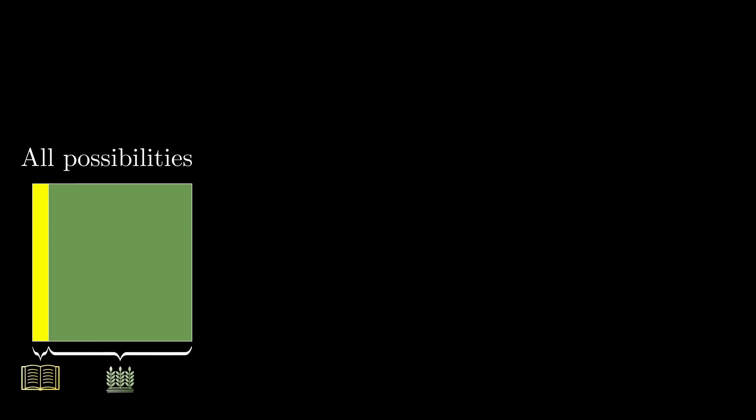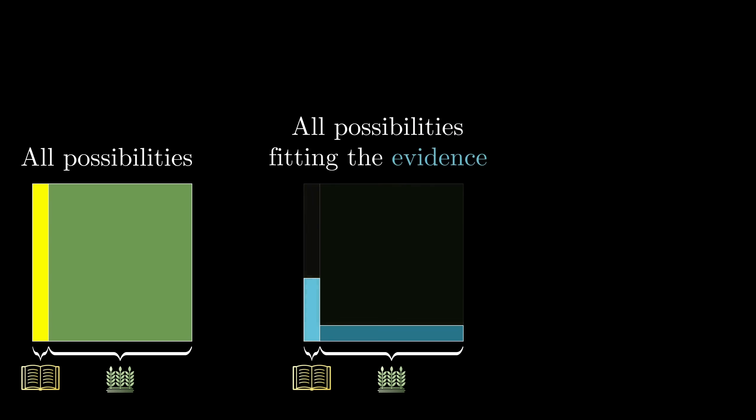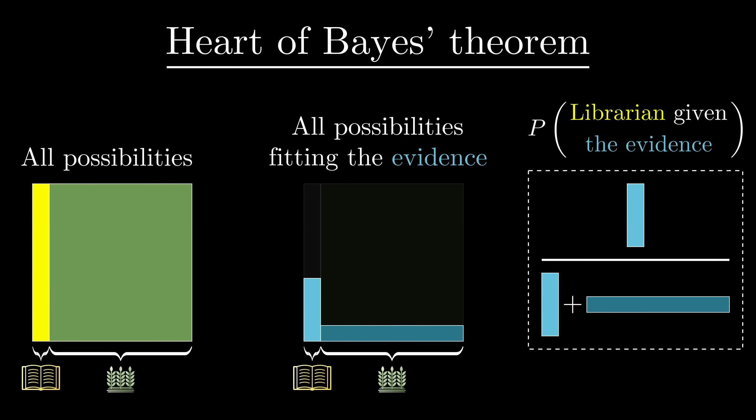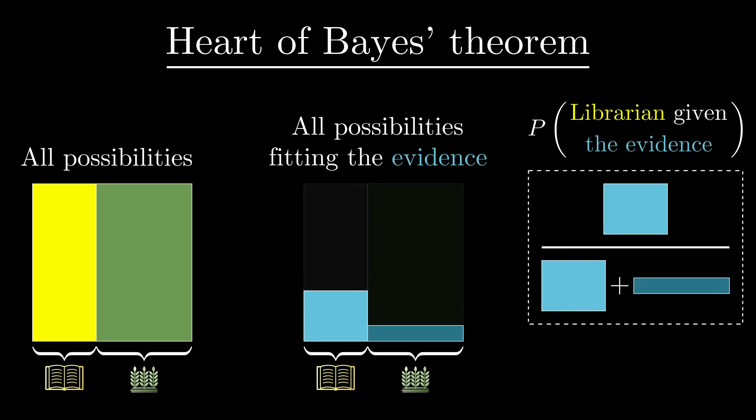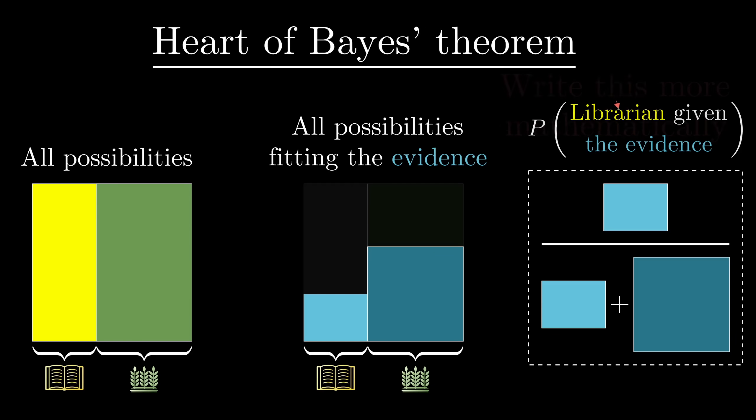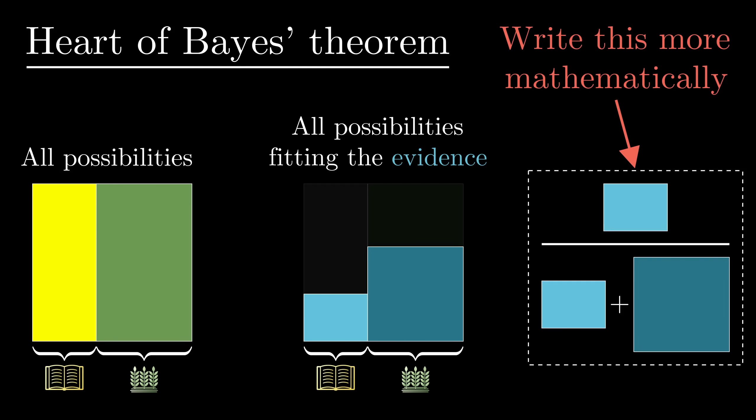If this line of reasoning makes sense to you, the way that seeing evidence restricts the space of possibilities and the ratio you need to consider after that, then congratulations! You understand the heart of Bayes' theorem. Maybe the numbers that you would estimate would be a little bit different, but what matters is how you fit the numbers together to update your beliefs based on evidence. Now, understanding one example is one thing, but see if you can take a minute to generalize everything that we just did and write it all down as a formula.